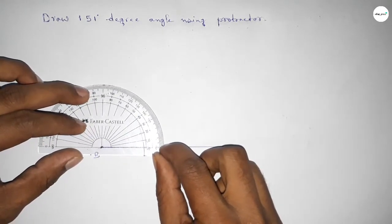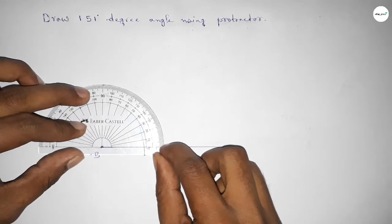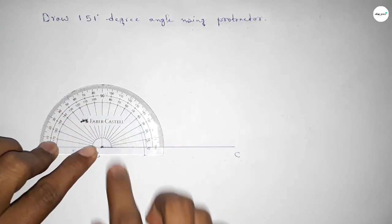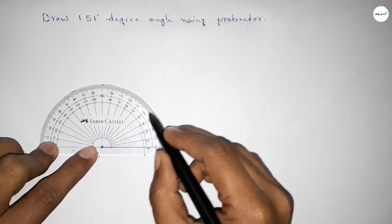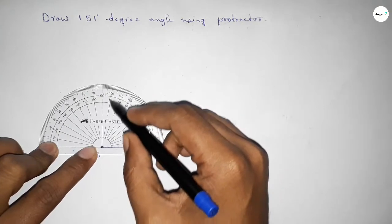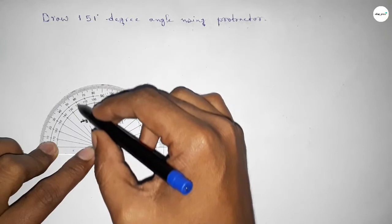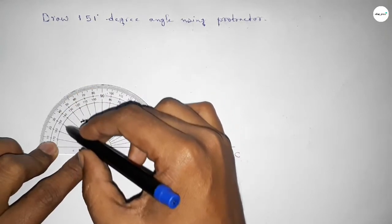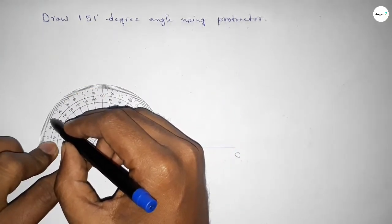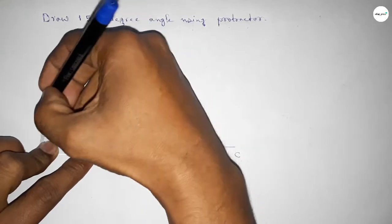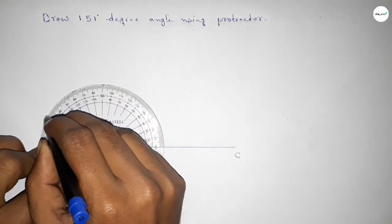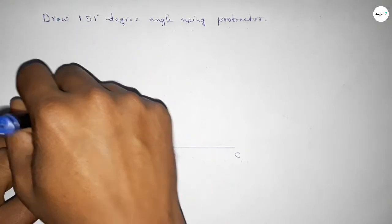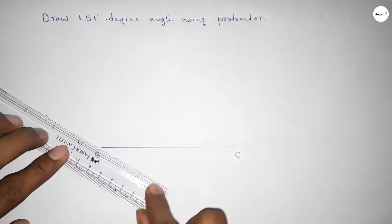Then counting the angles. So this is starting angle 0, 10, 20, 30, 40, 50, 60, 70, 80, 90, 100, 110, 120, 130, 140, 150. And this is 151 degrees. So this is 151 degrees.